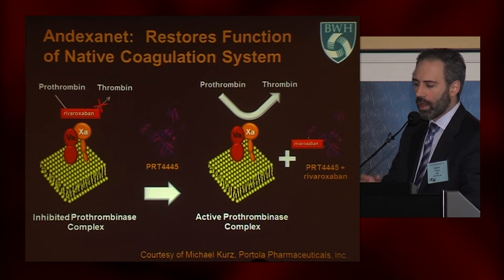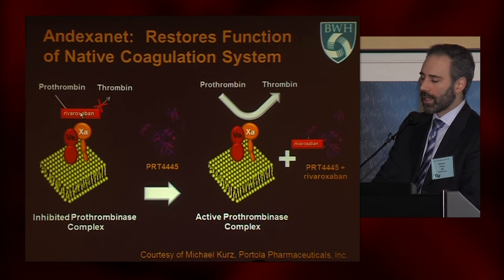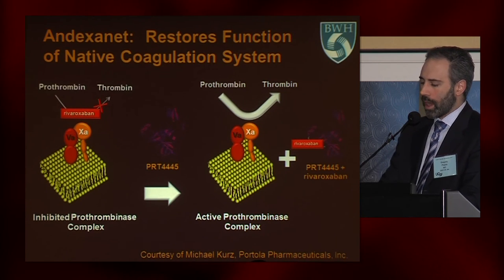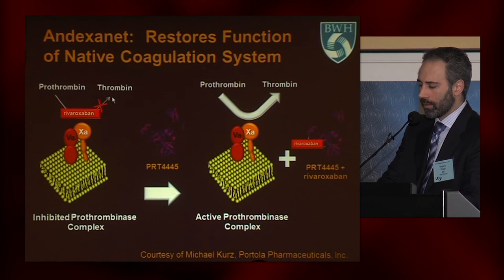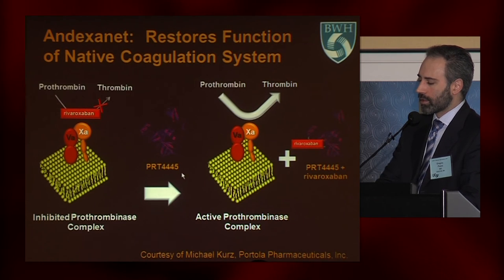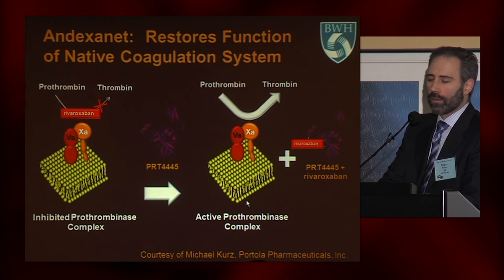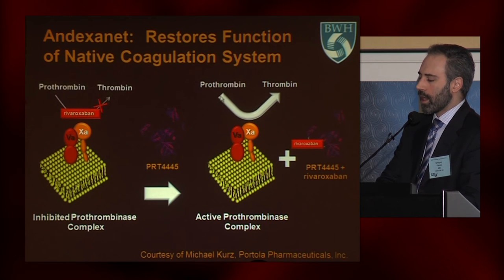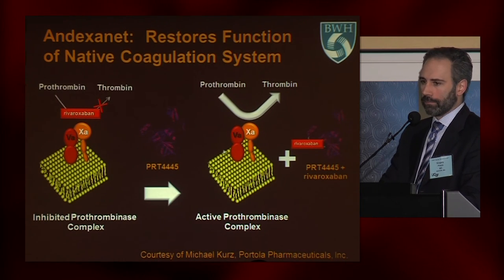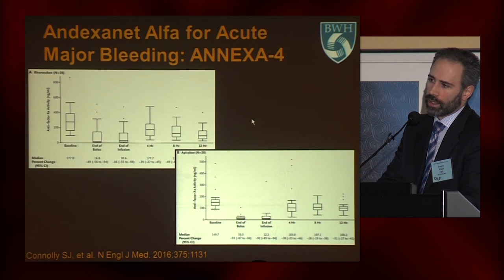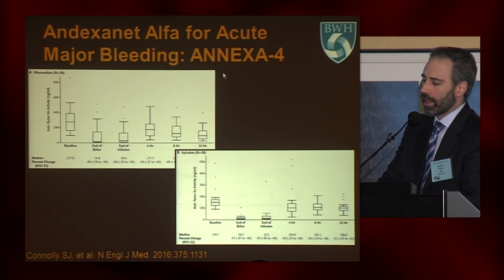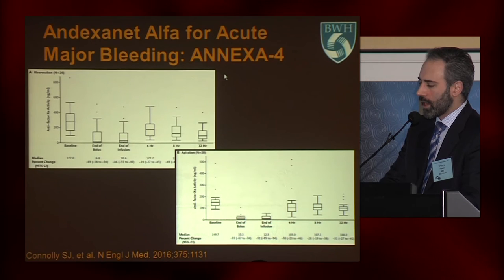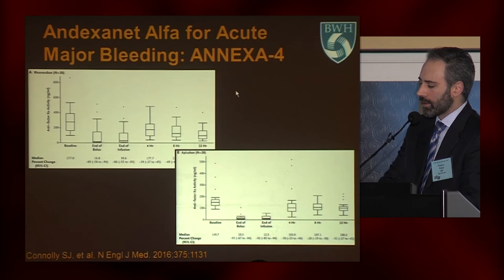Here we can see a schematic of how this works. In patients taking a direct Xa inhibitor such as rivaroxaban, rivaroxaban binds to the prothrombinase complex and inhibits it, so you can't convert prothrombin to thrombin. When you give andexanet alpha, it binds rivaroxaban with high affinity, leaves the prothrombinase complex alone, and now you can convert prothrombin to thrombin. This has been studied in a number of trials, one of the most recent being ANNEXA-4, which shows that andexanet alpha given as a bolus and infusion is very effective at reducing the effect of the direct Xa inhibitors.